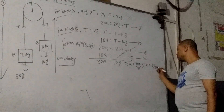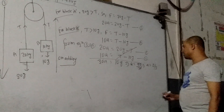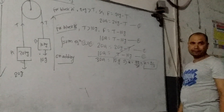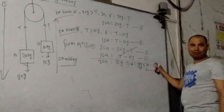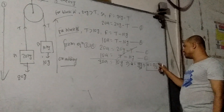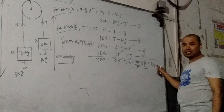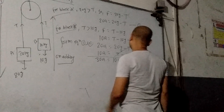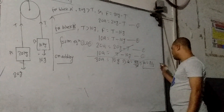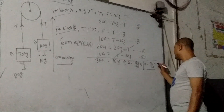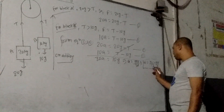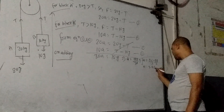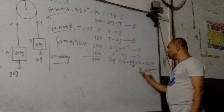So acceleration A = g/3 meters per second squared. The value of g is 9.8 m/s², so putting A = g/3, that gives approximately A = 3.26 meters per second squared. We have now found the value of acceleration.